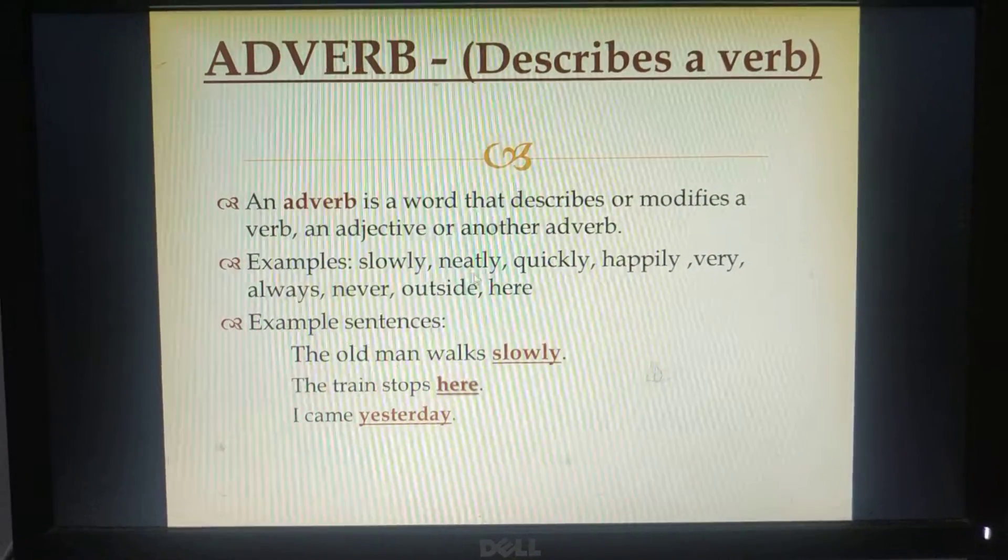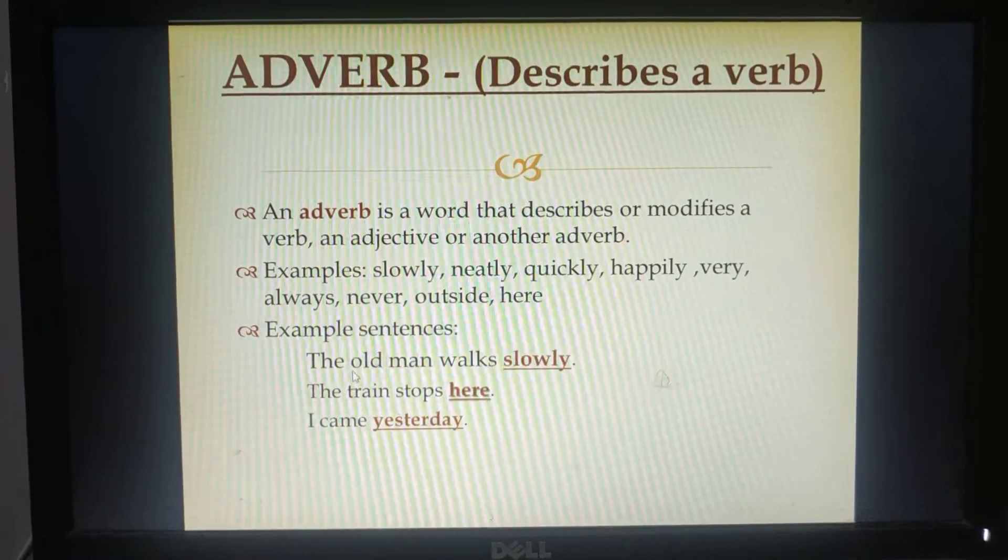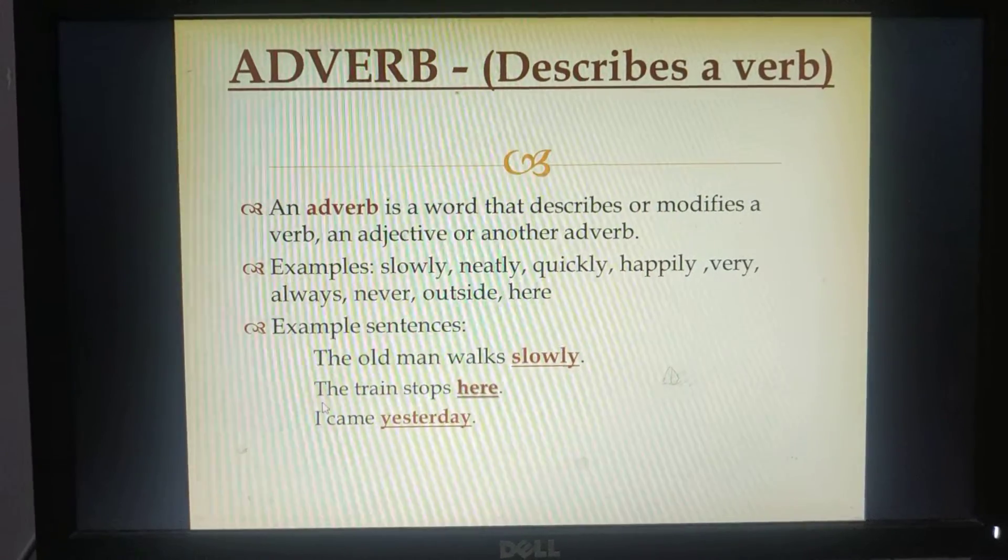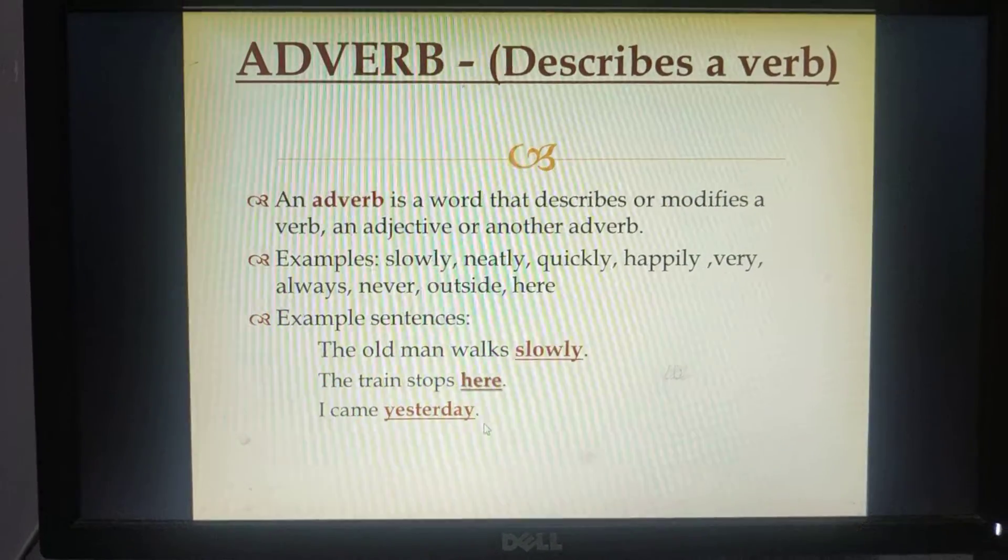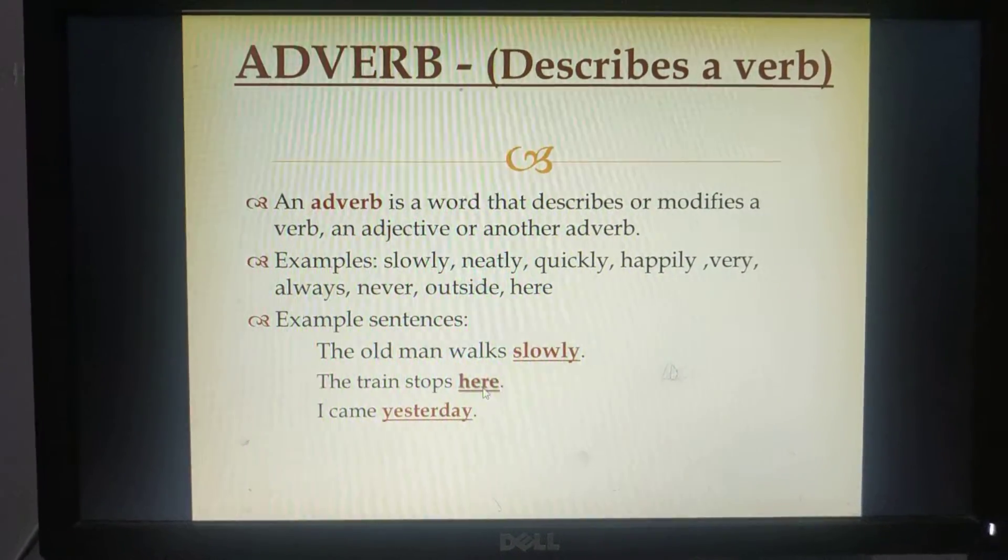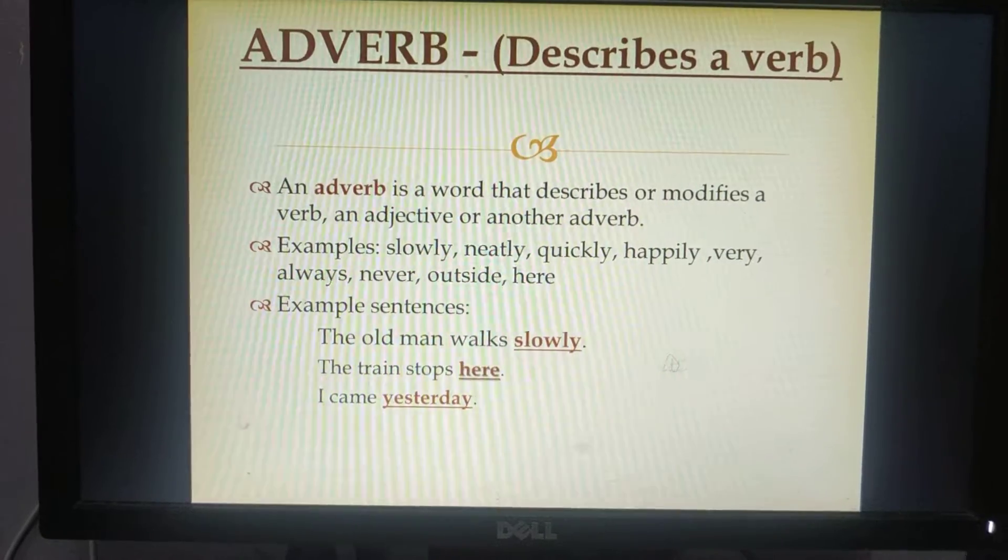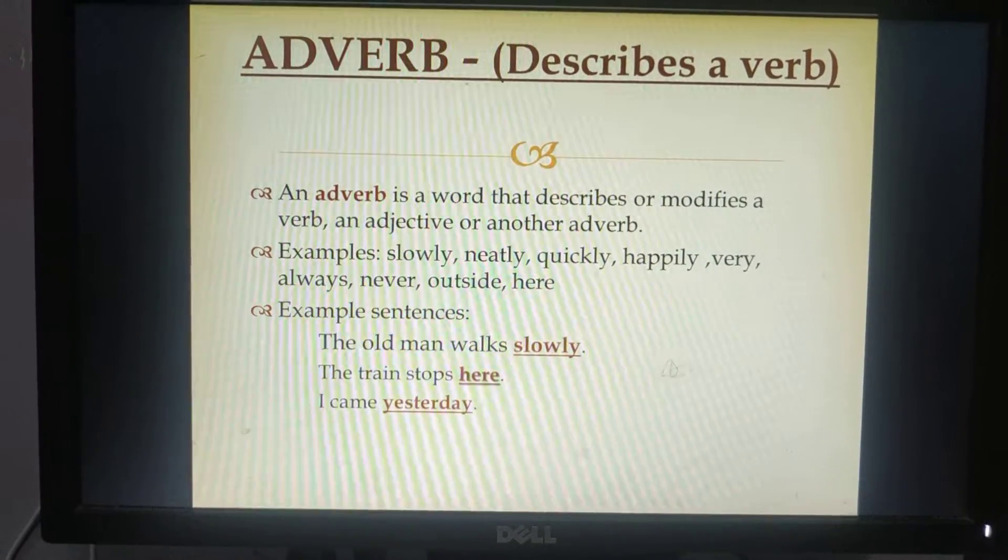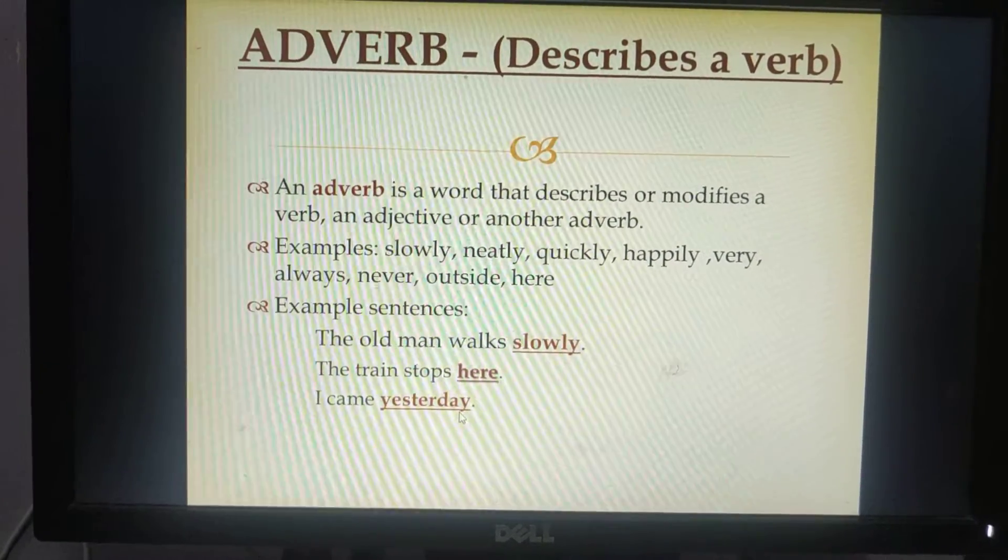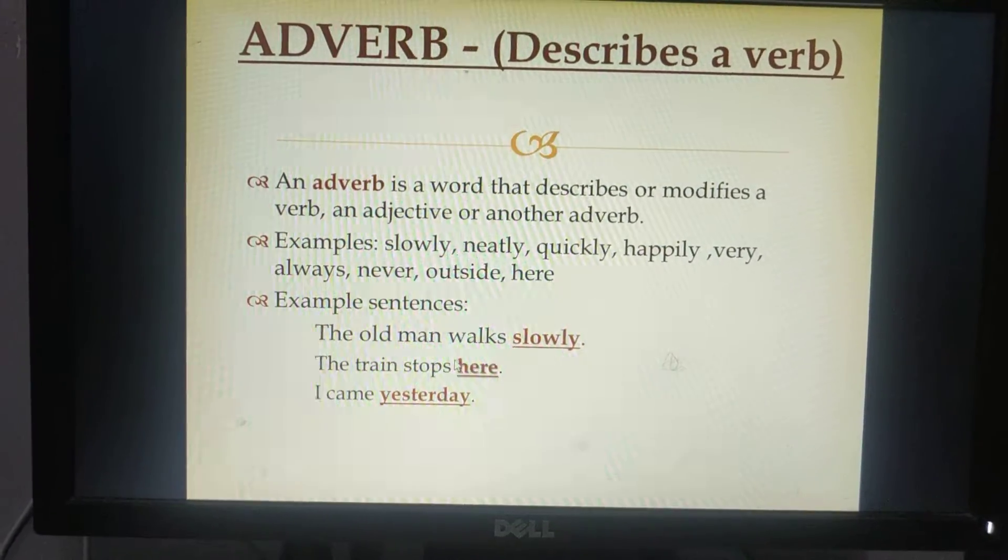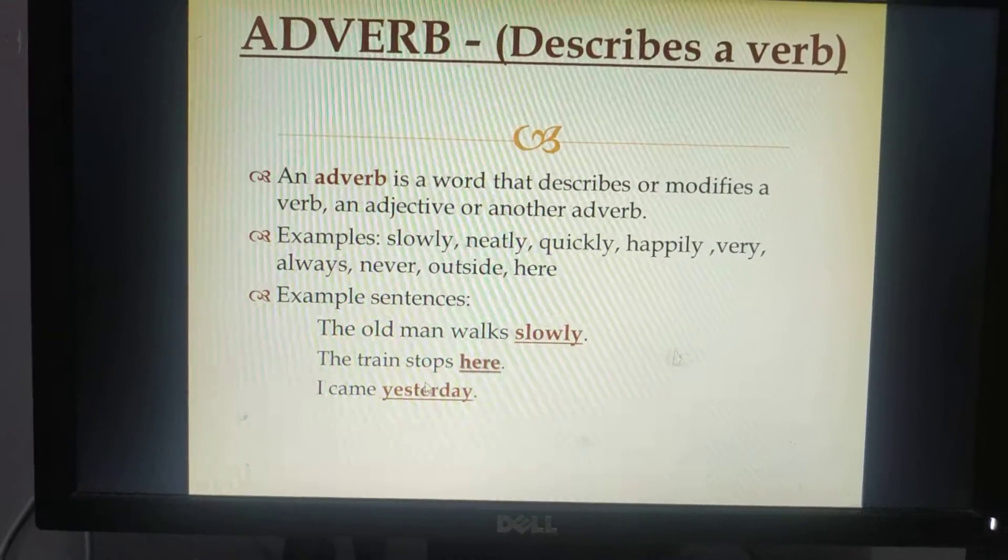See how these words are used in framing sentences. The first example is the old man walks slowly. The train stops here. I came yesterday. The underlined words slowly, here, yesterday show how the action is done, where the action is done and when the action is done. They tell you more about the verbs walk, stops, came. So they are called adverbs.